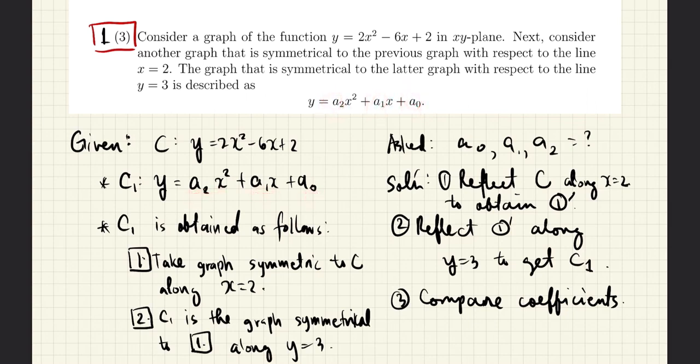We are told that we can obtain C1 using the following. First, we take the graph that is symmetric to C along the x equals 2 line. And then, we take that graph and C1 would be the graph that is symmetric to it with respect to y equals 3. We are asked to find the values of the coefficients A0, A1, and A2.